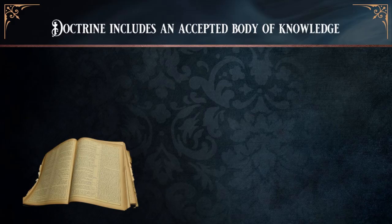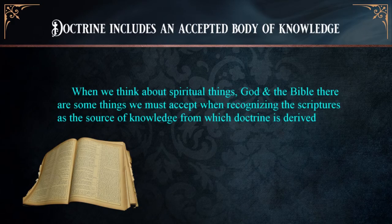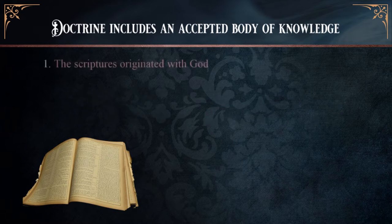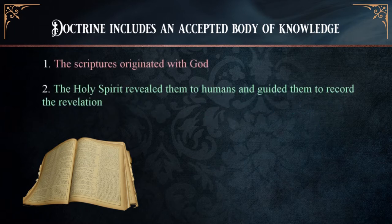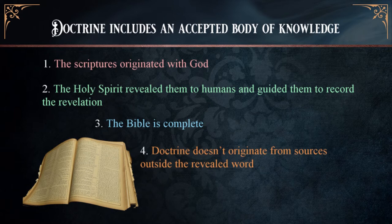Let's apply each element of the definition to the scriptures. Doctrine includes an accepted body of knowledge. When we think about spiritual things and God, we turn to the Bible. There are certain things one must accept when recognizing the scriptures as the source from which doctrine is derived: the scriptures originated with God, the Holy Spirit revealed them to humans and guided them to record the revelation, and the Bible is complete. Doctrine doesn't originate from sources outside the revealed word.